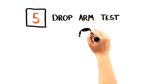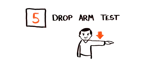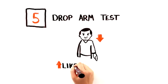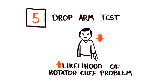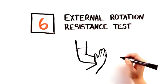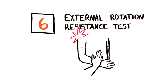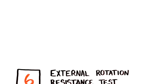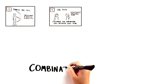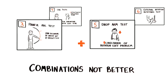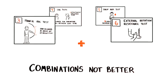Fifth, a positive drop arm test, in which the patient cannot resist downward pressure on an arm abducted at 90 degrees, leading to dropping of the arm, increased the likelihood of any rotator cuff problem. And finally, pain or weakness when externally rotating the shoulder against resistance seemed accurate for diagnosing disease. Combinations of these clinical tests seem not to be consistently better than individual findings.